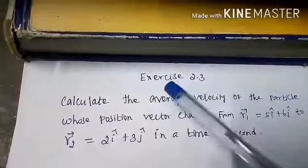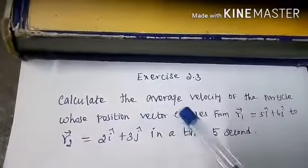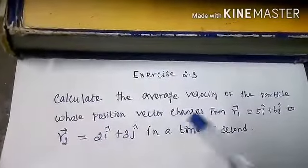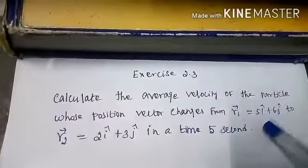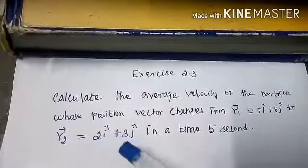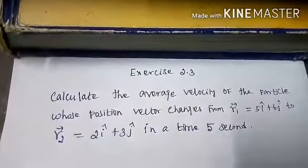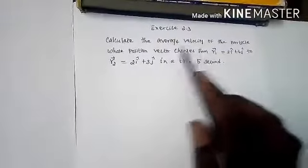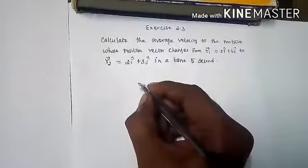Next is Exercise 2.3. The question is: calculate the average velocity of the particle whose position vector changes from R1 vector equal to 5i-cap plus 6j-cap to R2 vector equal to 2i-cap plus 3j-cap in a time of 5 seconds. What is being asked? Average velocity is asked.